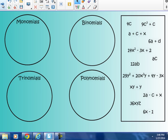I'm going to start with a + c + x. It has three different letters of the alphabet, three being the key idea there. That is a trinomial. 14x² - 3x + 2 has three unlike terms. It has an x², an x, and a constant, 2. That's also a trinomial. 2a - c + x, also a trinomial - an a, a c, and an x, three unlike terms. I think that's it for our trinomials.